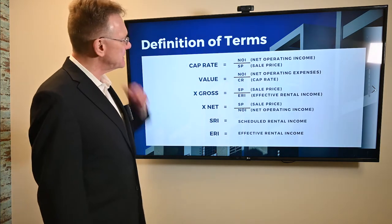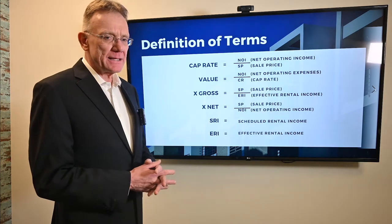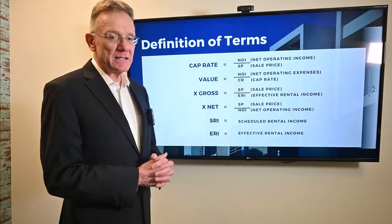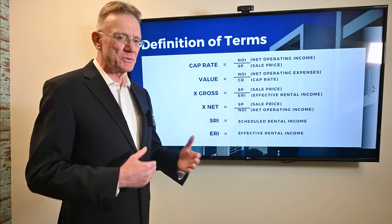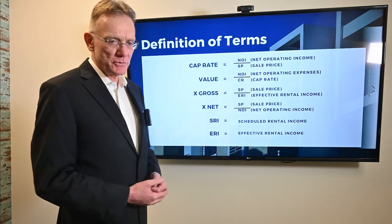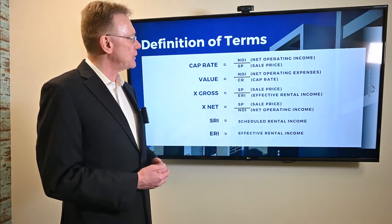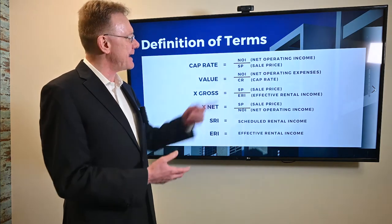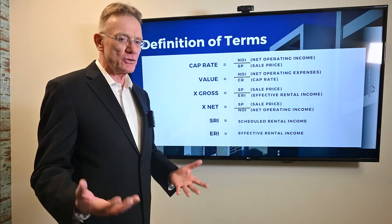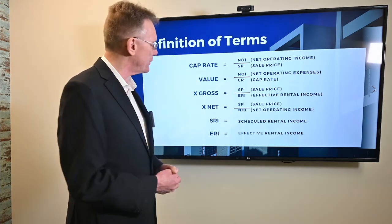The capitalization rate — you calculate that by taking the net operating income and dividing it by the selling price, and that'll give you a number like three, four, or five. The value of the property: if you want to calculate that, you take the net operating income and divide it by your capitalization rate, and that'll tell you how much the building is worth.